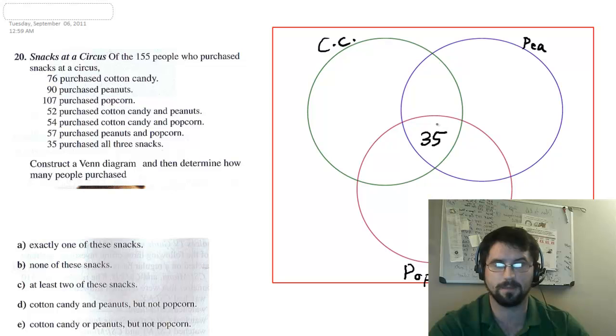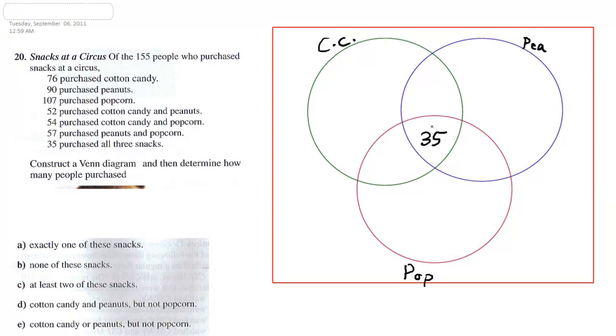And then from that, I'm going to start looking at these broader intersections. Not the three-way overlap, but the two-way overlap. So let's look at peanuts and popcorn. 57 purchased peanuts and popcorn. Peanuts and popcorn is this area here. It's telling me 57 purchased peanuts and popcorn. 35 are already accounted for. So what does that mean? It means I haven't accounted for 22. But now I have. 54 purchased cotton candy and popcorn. So I've accounted for 35, which leaves me with 19 up here. 52 purchased cotton candy and peanuts. 35 are accounted for, leaving me with 17.